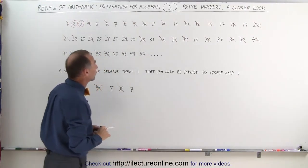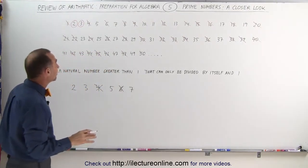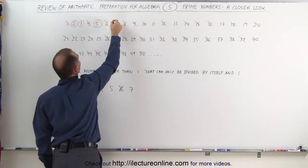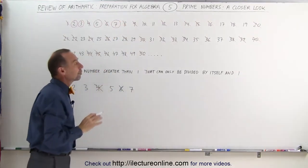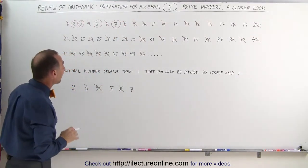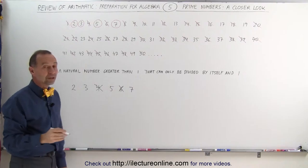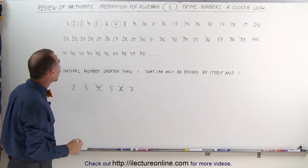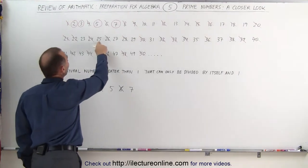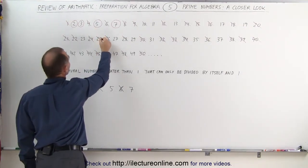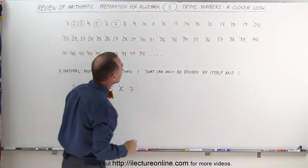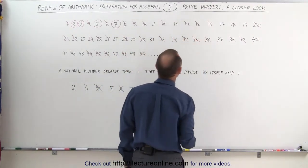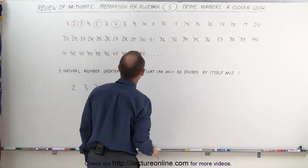So now, having eliminated all numbers divisible by 2 and by 3, I already know that 5 and 7 are prime numbers. Next, I look for all numbers divisible by 5. Those numbers end in a 0 or a 5. For example, 25 can be divided by 5 — not a prime number. 35 can be divided by 5 — not a prime number. I already took care of 45.